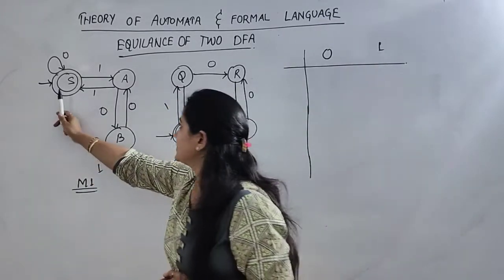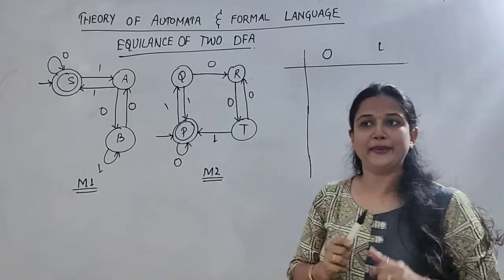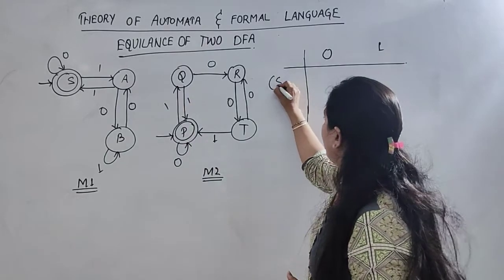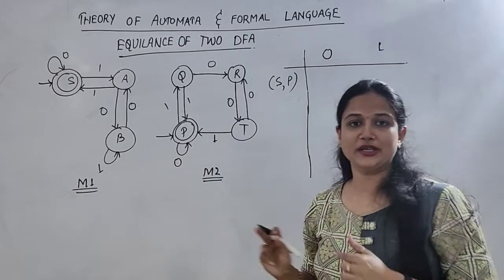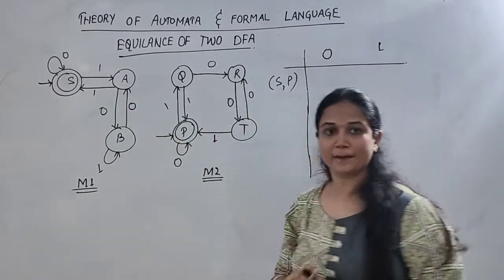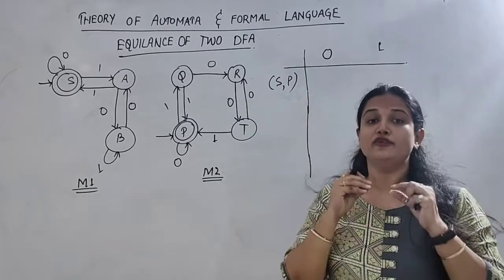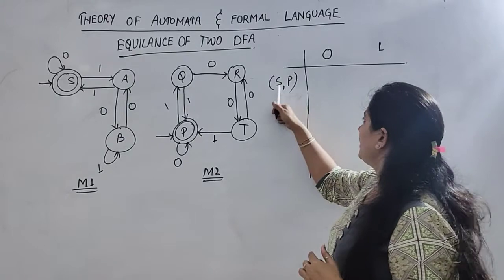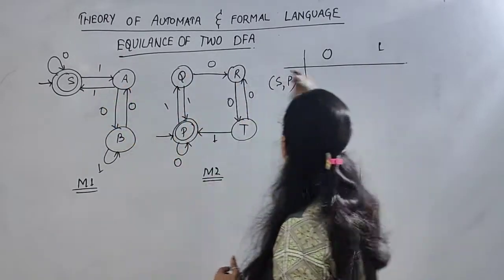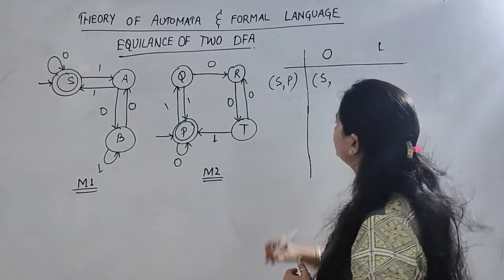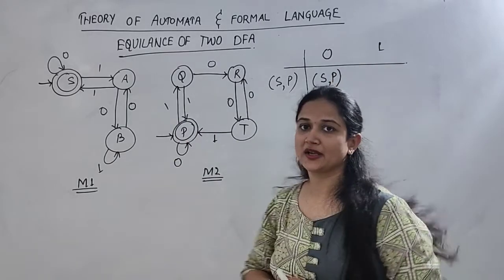As you can see, M1's initial state is S, and M2's initial state is P. Now, we will check zero input for both S and P. S on zero is S, therefore we will write S. P on zero is P, therefore it is P.